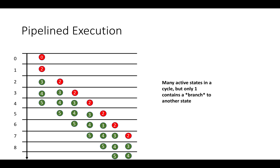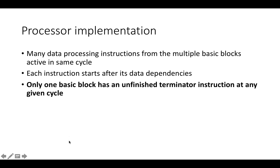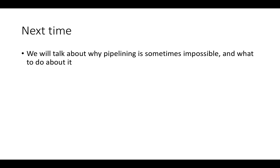Pipelining is a safe optimization that won't cause starvation or deadlock. Every instruction starts after its data dependencies, and only one basic block has an unfinished terminator instruction in any given cycle. But we can overlap a huge number of data processing instructions and get a massive performance boost compared to processors that only overlap instructions within the same instance of the same basic block. Pipelining is an amazing optimization, but it's not always possible. Next time we'll talk about why pipelining is sometimes impossible and what we can do to avoid those situations.